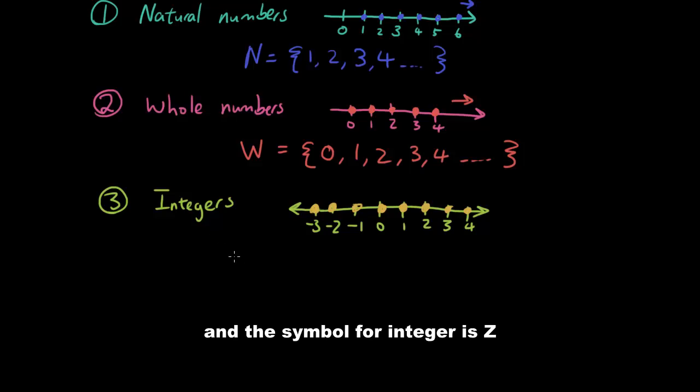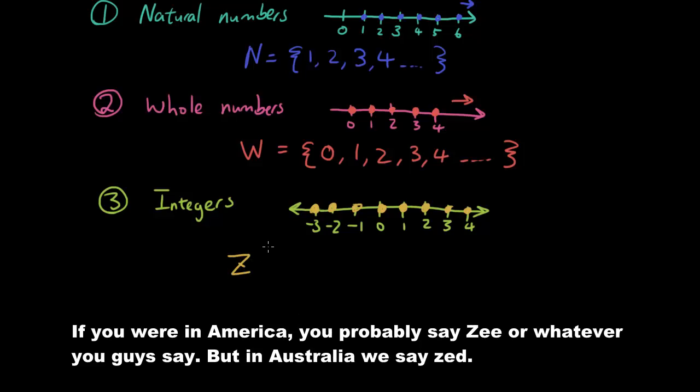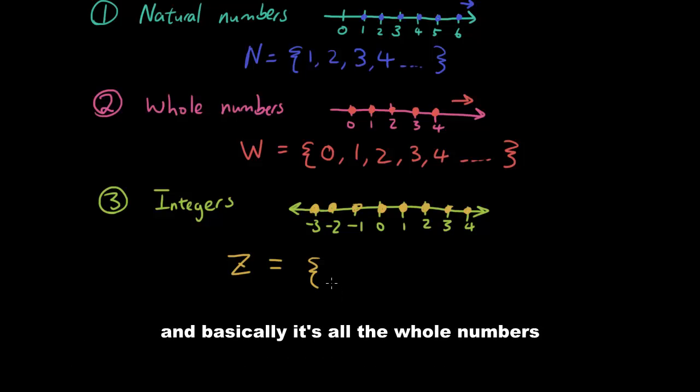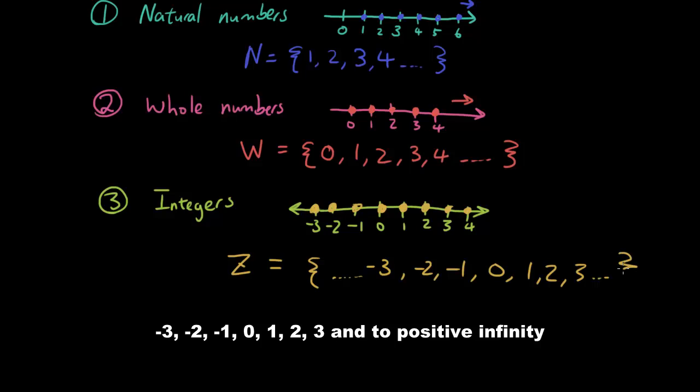The symbol for integers is Z. If you are in America you probably say Z, but in Australia we say Z. Basically it's all the numbers towards the negative infinity: negative 3, negative 2, negative 1, 0, 1, 2, 3 and to positive infinity. So again it's an infinite set of numbers and we call it integers.